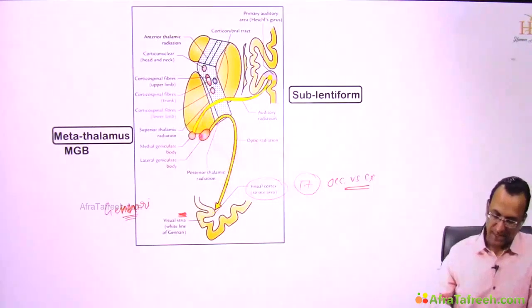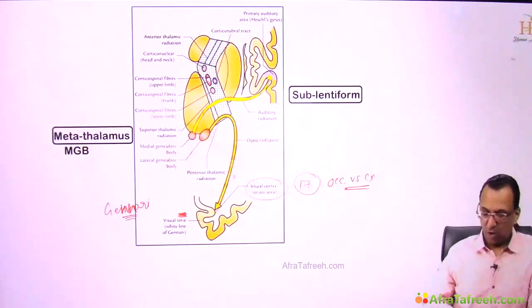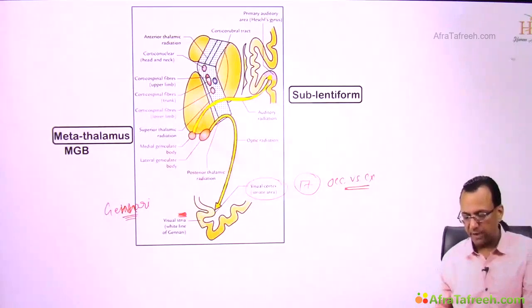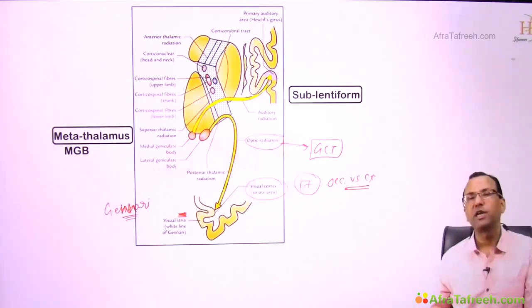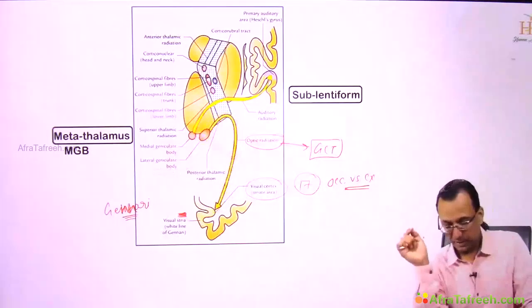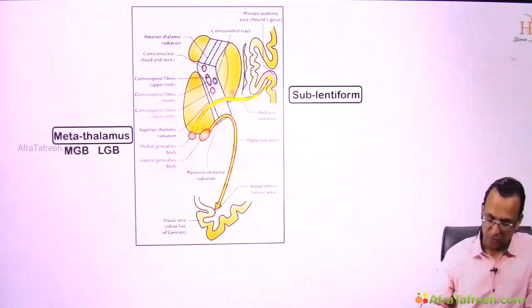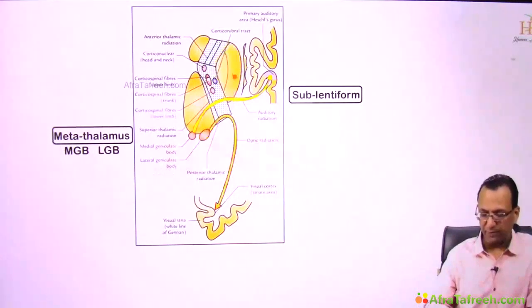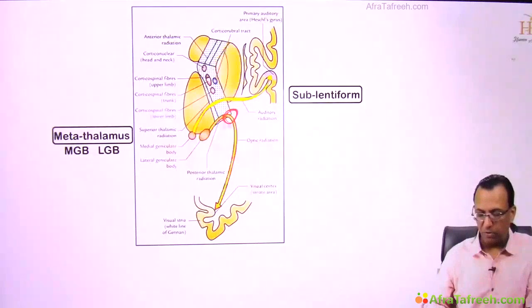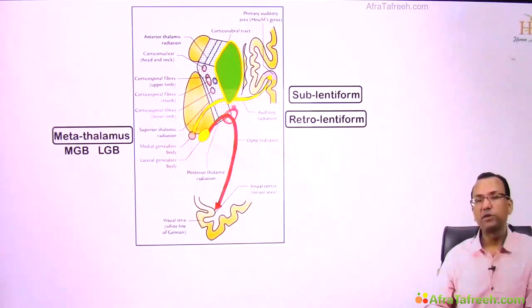The lateral geniculate body sends optic radiation toward area number 17 — the calcarine sulcus. This is also called the geniculocalcarine tract, because it comes from the lateral geniculate body and goes to the calcarine sulcus. It passes behind the lentiform nucleus, using the retrolentiform fibers of the internal capsule — the posterior part of the internal capsule.